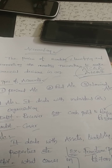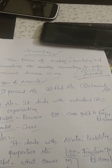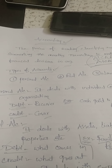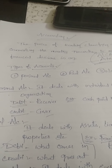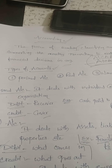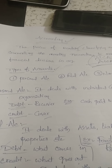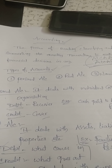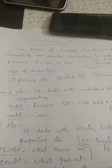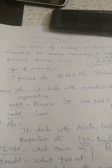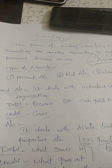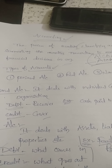In any accounting transaction, we have to record every transaction in the double entry system. Double entry system means two ways of the transaction are recorded. The recording process is done normally by using two terminologies of accounting: debit and credit.